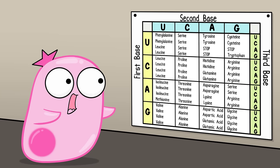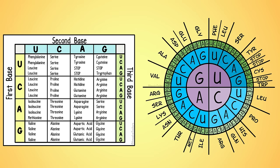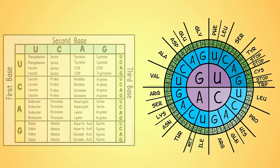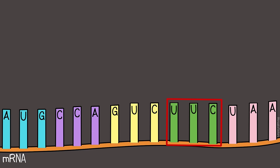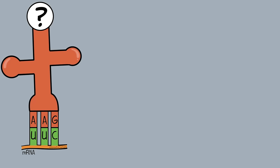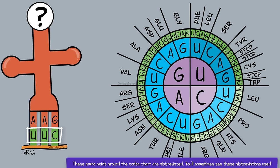Now with those three codons, we used a rectangular codon chart. We mentioned that there are other ways to represent this information, and the circular chart is common to find as well. The circular codon chart typically works by starting on the inside and moving outward. So this fourth codon we have here is UUC. That means the tRNA anticodon would be AAG. But again, we're going to use the mRNA codon in the chart.